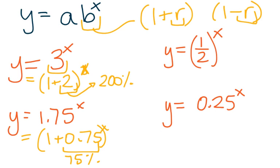If we wanted to rewrite the base over here, 1 half, instead of writing it as 1 half, we could write it as 1 minus 1 half, or 1 minus 0.5 to the x. That shows us this quantity is decreasing by 50% every time.